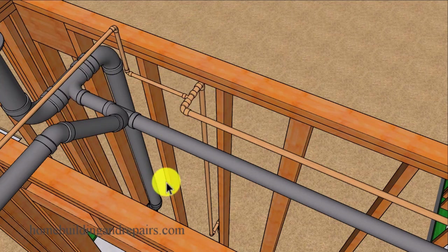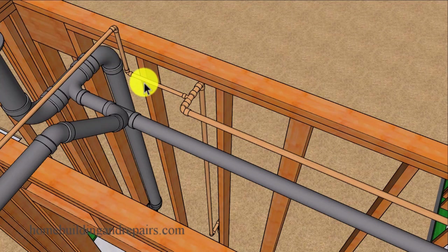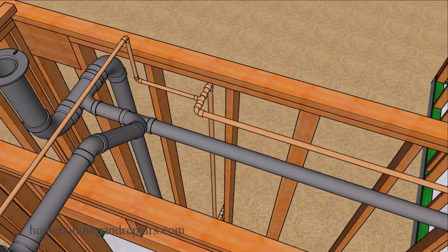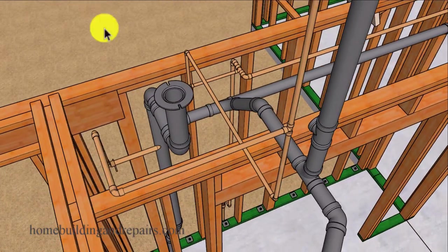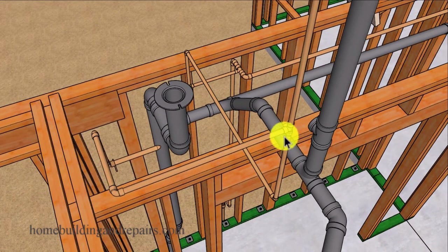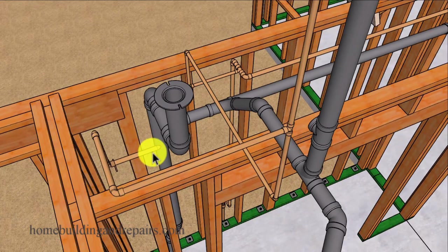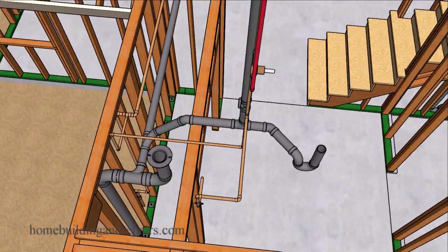Instead we are going to be dropping the ceiling in the closet here so we can have the pipes a little bit lower, and we are going to tee off of this with a half inch line. This line here is three quarters. Now this line might need to be larger depending upon the size of your home. With this line here we are going to feed the shower and the toilet. So again this is going to be cold water.